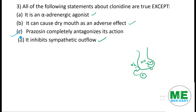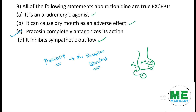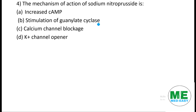The incorrect statement is that prazosin competitively antagonizes clonidine's action. Prazosin is an alpha-1 receptor blocker — it blocks alpha-1 receptors in blood vessels causing vasodilation. Since prazosin acts on alpha-1 and clonidine acts on alpha-2, they have no interaction, so prazosin does not antagonize clonidine's action. That is the answer.